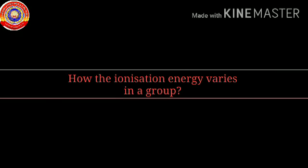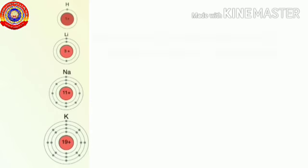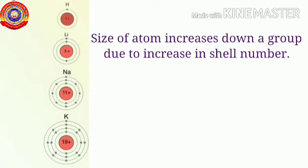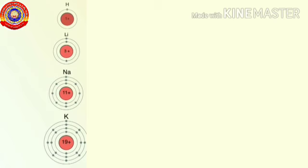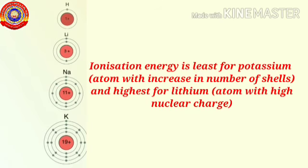Let's see how ionization energy varies in a group. We learned that the size of atom increases as we move down a group due to the increase in number of shells. So as we move down a group, the ionization energy decreases, because of the increase in size of atom. The atom with the biggest size shows the least ionization energy. So potassium has the least ionization energy here.